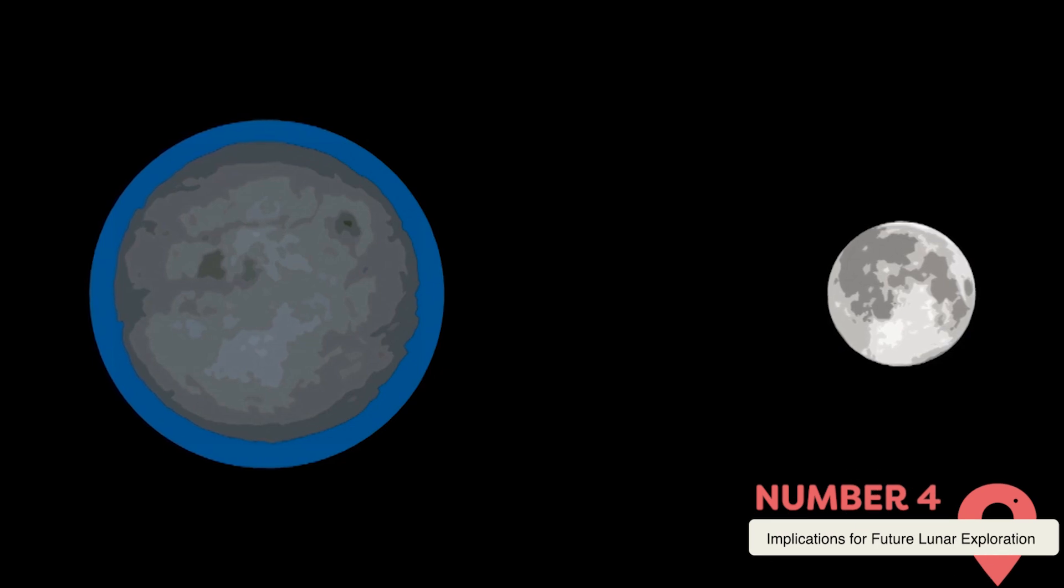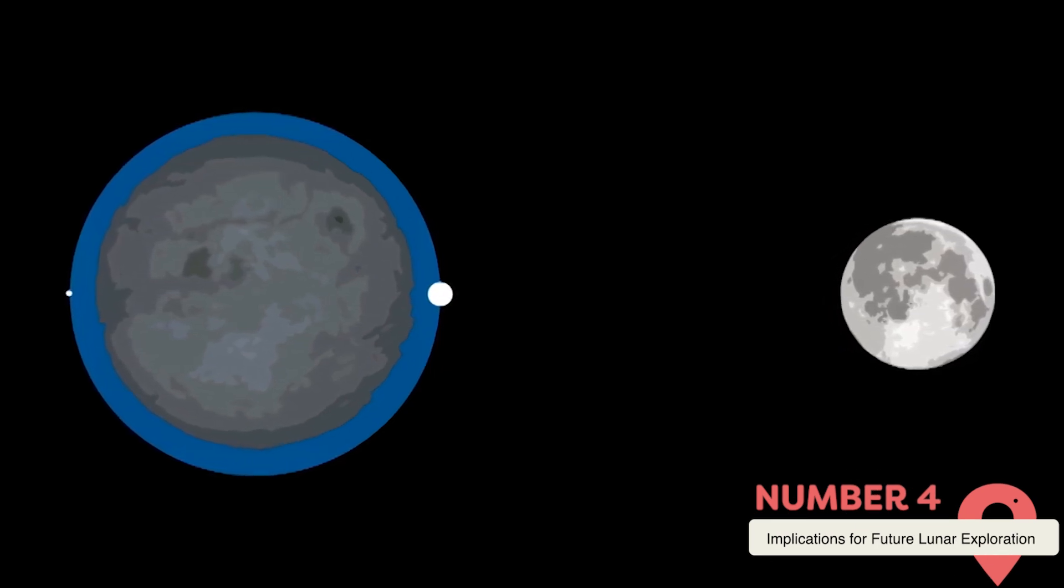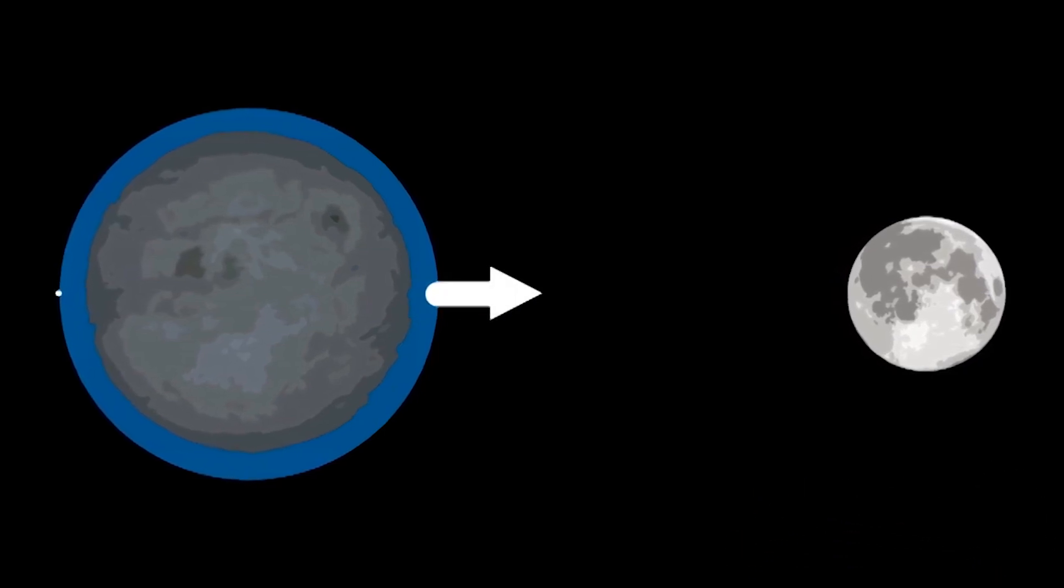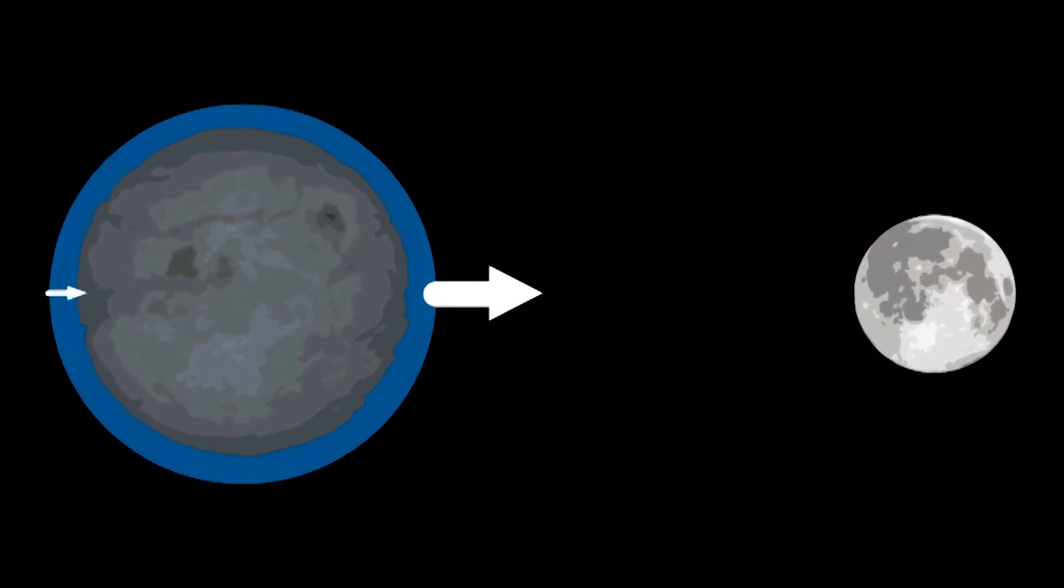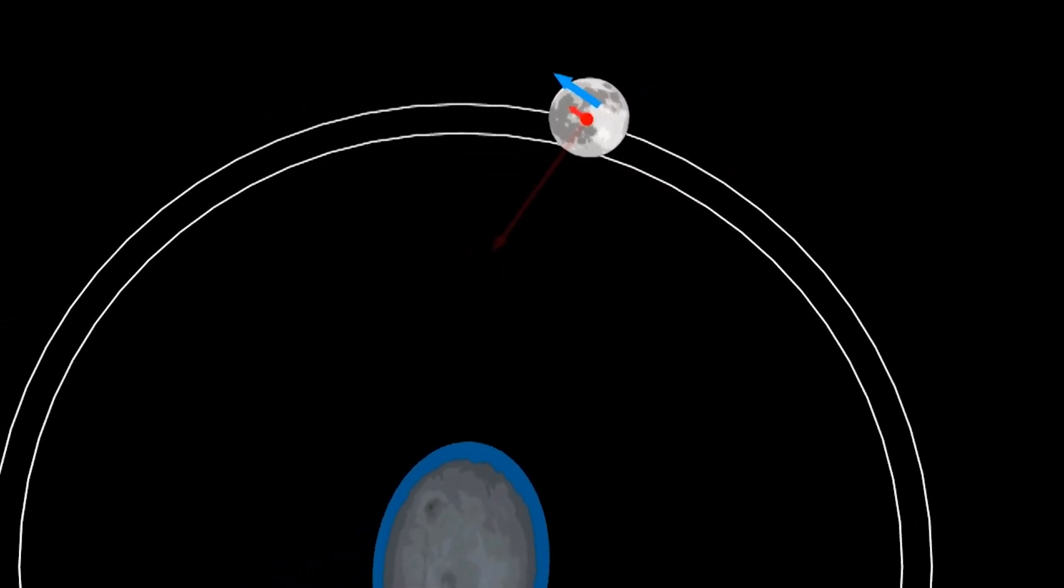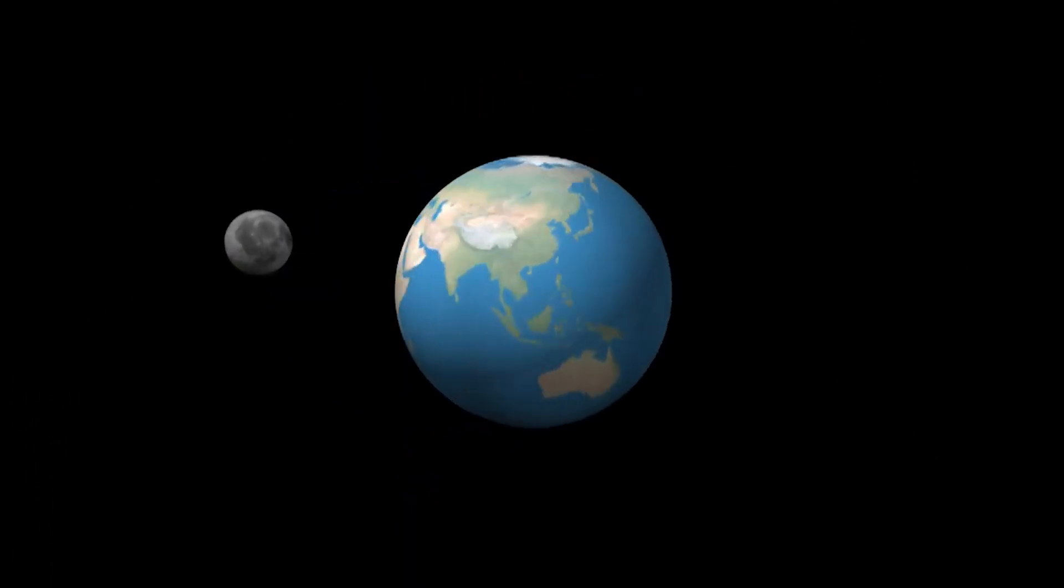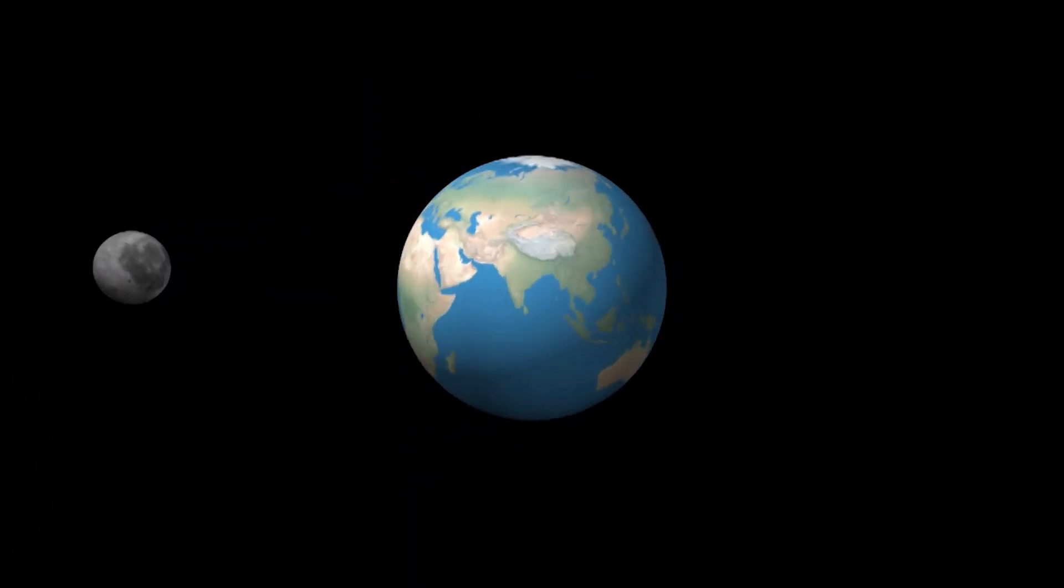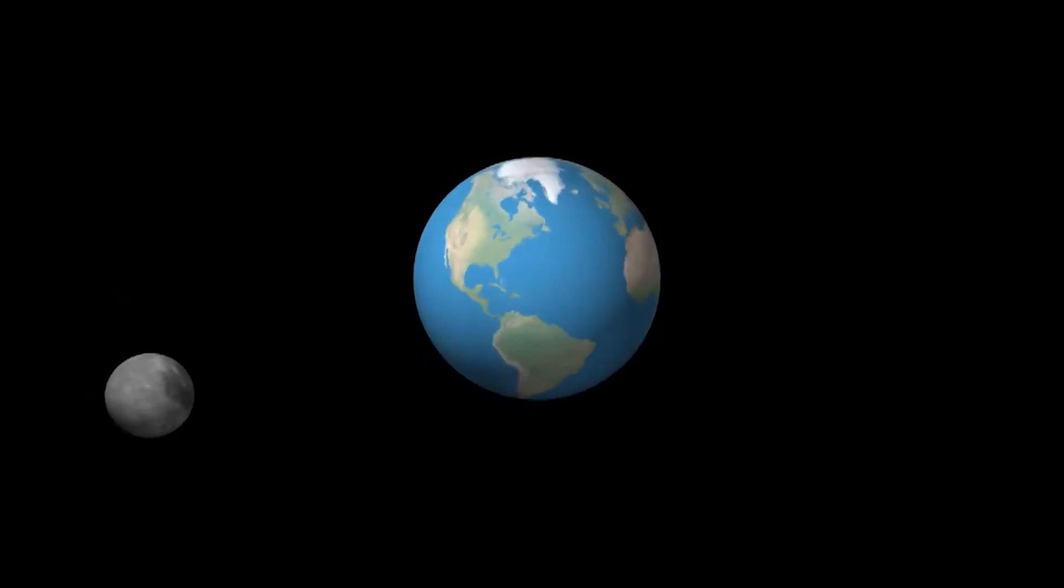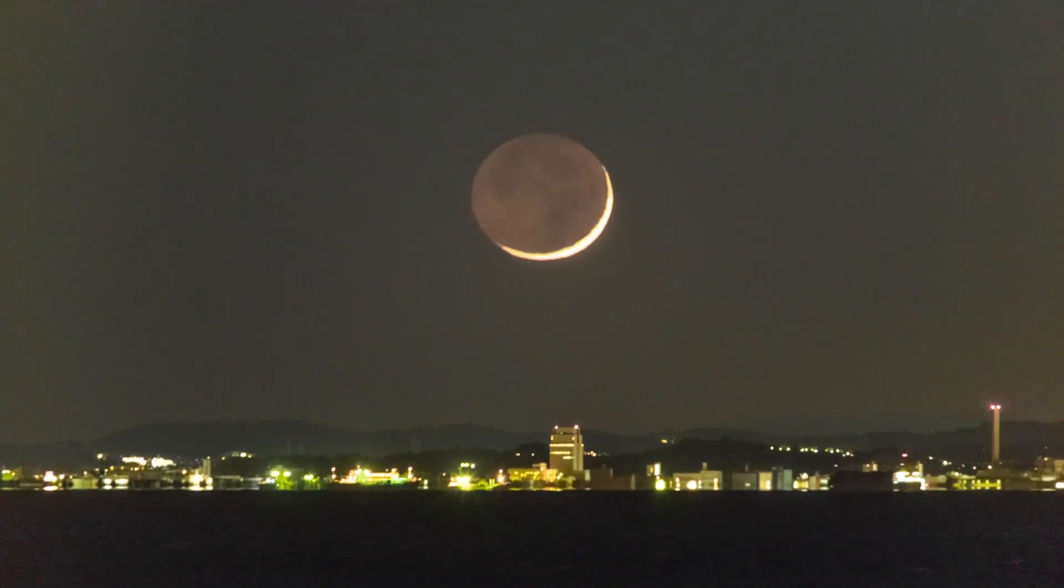Implications for future lunar exploration. As we look to a future of increased lunar exploration and potential colonization, understanding the Moon's retreat takes on practical importance. While the yearly change in distance is minuscule on human timescales, it could potentially impact long-term planning for lunar missions and infrastructure. For instance, slight changes in the Moon's distance could affect the timing and fuel requirements for spacecraft trajectories between Earth and the Moon. Over decades, accumulated changes might necessitate adjustments to communication systems or observation schedules for lunar telescopes.